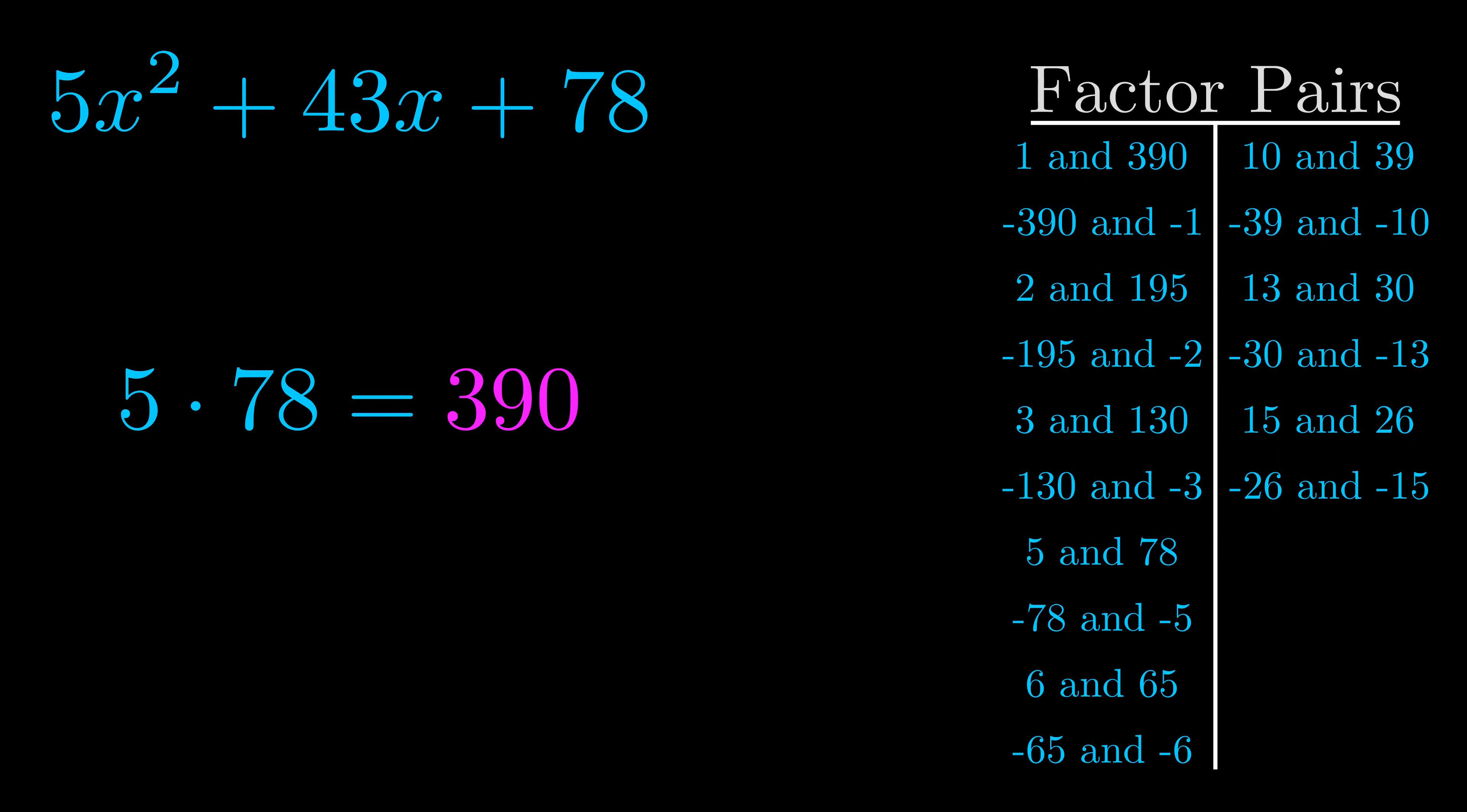The b value is the coefficient on the x term. That's the middle term, the one that we haven't done anything with yet. And really this is the only factor pair that we need.